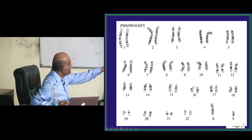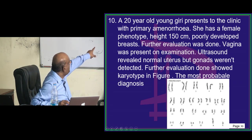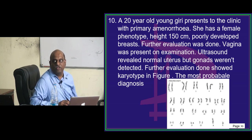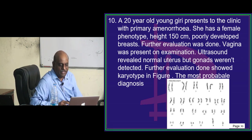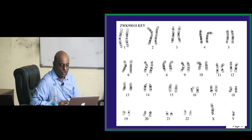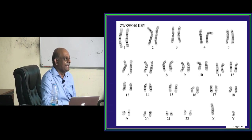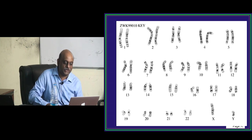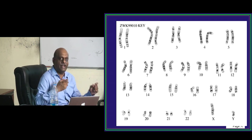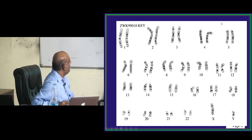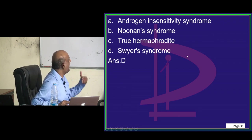In androgen insensitivity syndrome, the vagina typically ends as a blind pouch with no uterus. That is the fundamental difference. Rocket Trader has already joined MS — congratulations! All of you will join MD/MS/DM/MCH eventually. Just spend time every day and go back to onlinembbs.com for revision. That is Swyer syndrome, doctor.